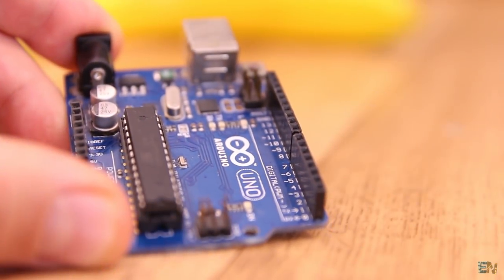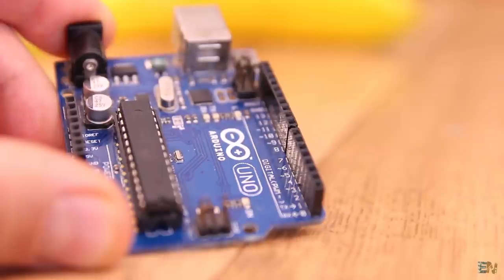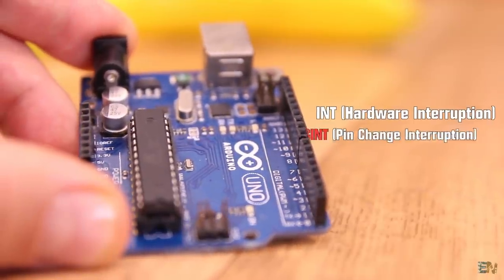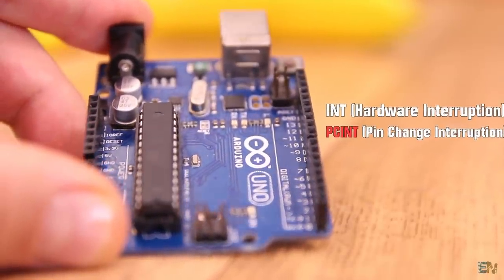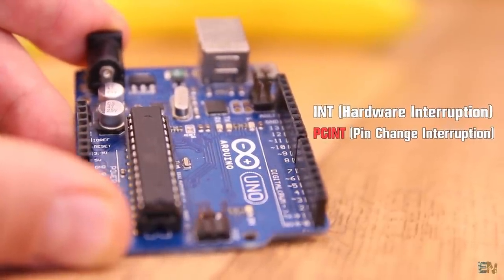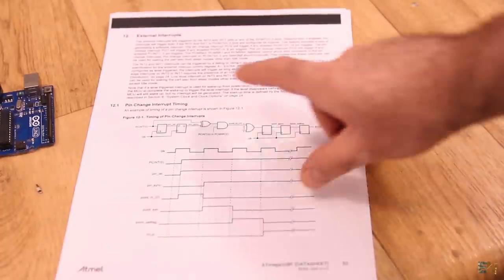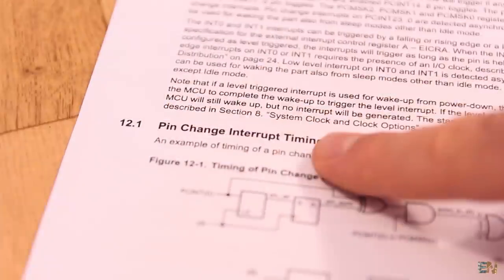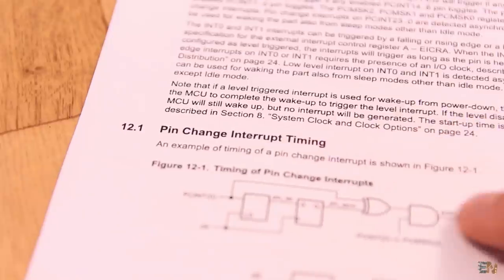What's up my friends, welcome back. With the Arduino we have two types of interruptions, the INT for external hardware interruptions and the PCINT for pin change interruptions. Today we will take a look at these last ones, the pin change interruptions and we leave the hardware interruptions for a future video.